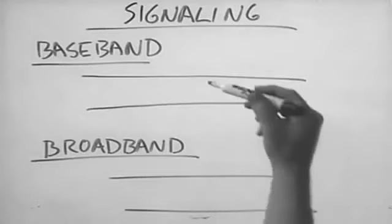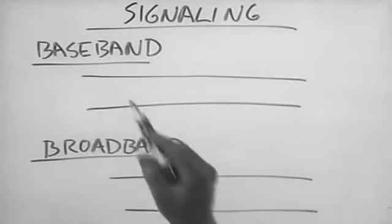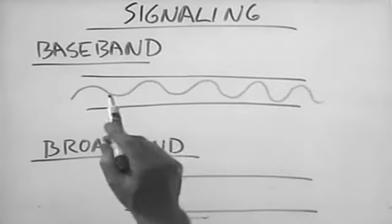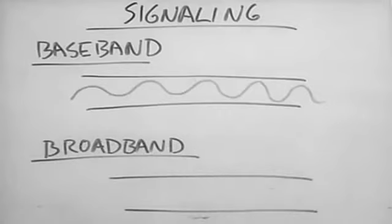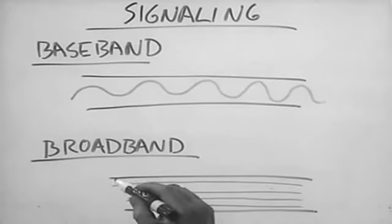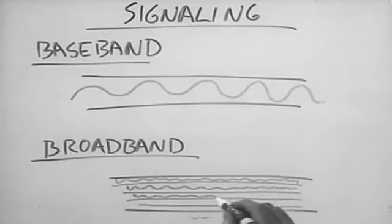There's one more categorization: the type of signaling used by the network. There are basically two types — baseband signaling and broadband signaling. This represents our network medium, whether it's a wire, fiber optic cable, or otherwise. With baseband signaling, you can have one signal at a time on the network medium, and that signal uses the entire network medium all at the same time. Broadband signaling, on the other hand, divides the network medium into multiple channels, allowing multiple signals to be transmitted on the same network medium at exactly the same time.